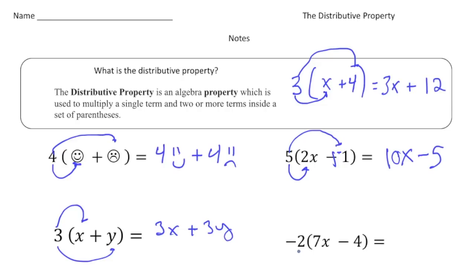And then finally, we now have a negative single term on the outside, right? So negative two times 7x will be negative 14x. And then negative two times the negative four. Well, a negative times a negative is a positive. So it's going to be plus eight.